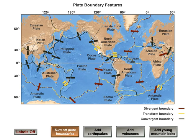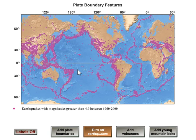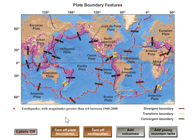As the plates move, they jostle and rub against each other, and that's the main reason why the Earth has earthquakes. If I turn off the boundaries and add the earthquakes, you can see this map of earthquakes that have occurred of a certain size over a number of decades. It shows us that earthquakes are not at all randomly distributed — they occur mostly along the plate boundaries of the world, where plates rub against each other at their shared edges.